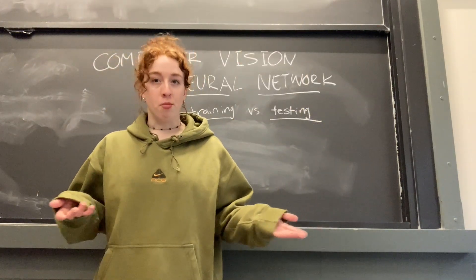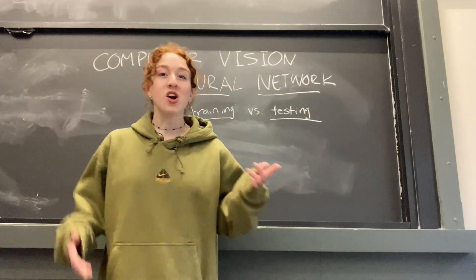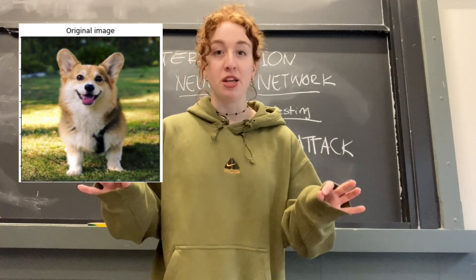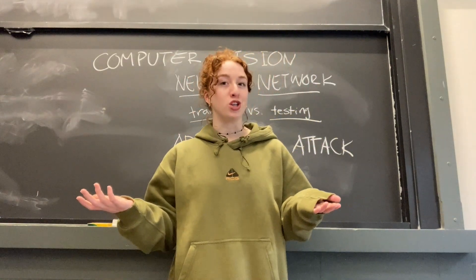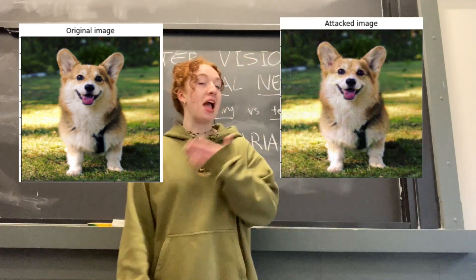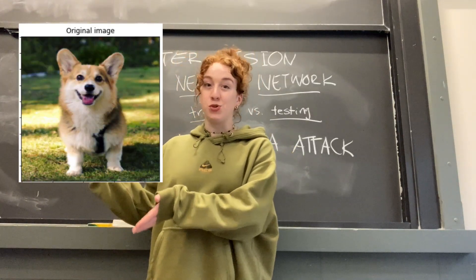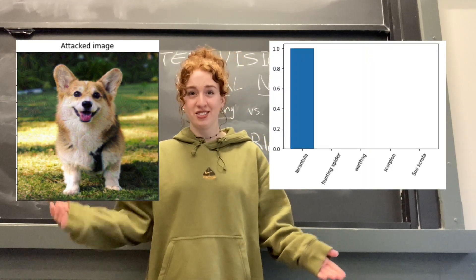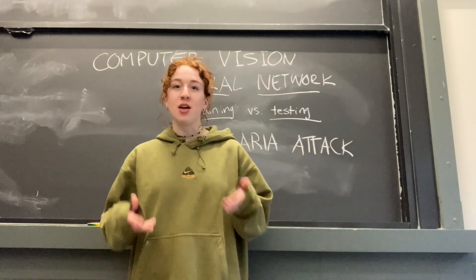So once we've trained and tested our model and it looks like it's doing a pretty good job classifying corgis, can we trust it to classify corgis perfectly every single time? The answer is no. If we aren't careful, somebody could try to trick our model using something called an adversarial attack. In an adversarial attack, somebody takes an image that our model would typically correctly classify and makes several tiny, imperceptible changes that we couldn't notice with the human eye, but which are enough to push our model over the edge and completely trick it. For instance, this is our original picture of our corgi, and this is our attacked image — we can't tell the difference between these two, but our model can. When our original corgi is fed into our model it's classified as a corgi, but when our modified corgi is fed into our model it's classified as a tarantula.